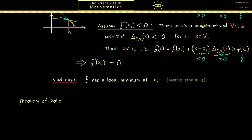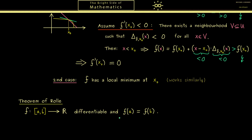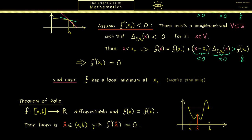Rolle's theorem is applicable if we have a differentiable function on a compact interval. It's important that we have boundary points a and b, because we need the assumption that f(a) = f(b). In a graph this means we start at a given value and the function can do a lot of things, but we end at the same value again. Then the claim is that we find at least one point — which we call x-hat — where we have a horizontal tangent. In other words, we find x-hat in the open interval such that f'(x-hat) = 0. One important part is that x-hat is not a boundary point, so it is an inner point of the interval.